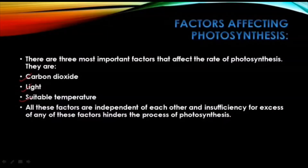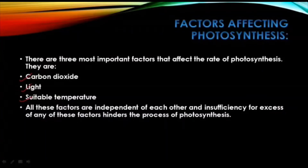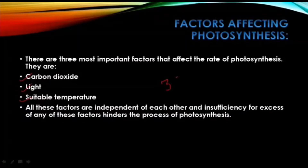There is a particular temperature — neither very high nor very low temperature has a good effect on photosynthesis; both are harmful for the process. The exact or optimum temperature suitable for photosynthesis ranges between 35°C to 40°C.